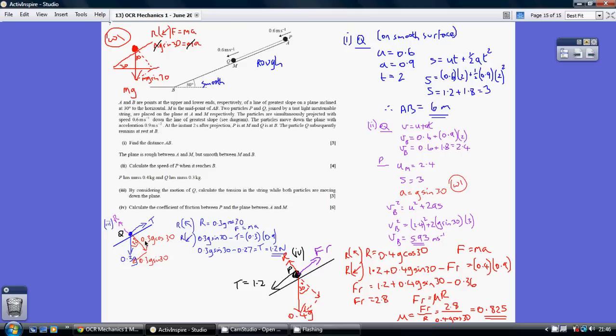Resolving perpendicular to the plane we can see that r equals 0.3g cos 30. Then resolving in the same direction as the plane we've got our net. There is movement down the plane so we're using f equals ma. Our net force is going to be 0.3g sin theta. That's this one here. Down the plane less the tension going up the plane. So that is our net force down the plane. f equals ma equals 0.3 times 0.9. That allows us to work out the tension to be 1.2 newtons.